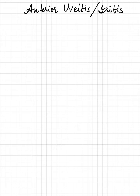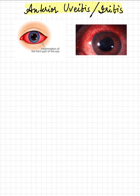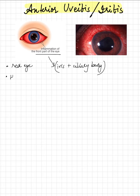Anterior uveitis, or iridocyclitis, is one of the most important differentials of red eye. It is defined as inflammation of the anterior portion of the uvea, which includes the iris and ciliary body. It is associated with HLA-B27, and may be seen with other conditions that share this association.